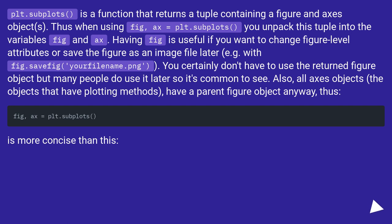If you want to change figure-level attributes or save the figure as an image file later, you can use fig, ax = plt.subplots. For example with fig.savefig('filename.png'). You certainly don't have to use the returned figure object but many people do use it later so it's common to see.